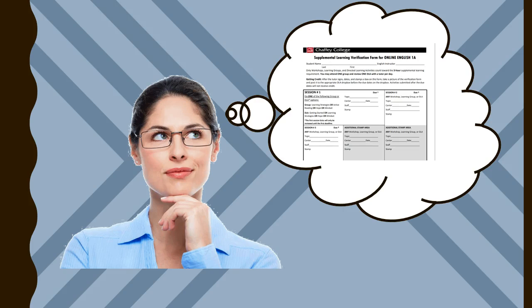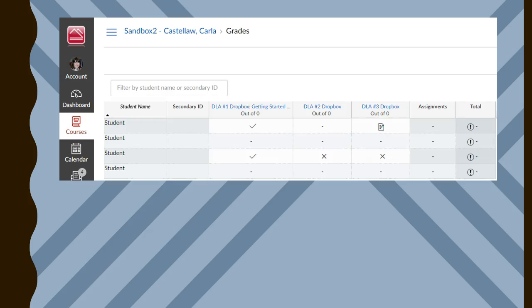To help you determine whether your students have completed their supplemental learning requirement, you've been added to the CAL as a non-editing instructor, which gives you permissions to see the grades section of the CAL. That section allows you to decide whether your students have completed their supplemental learning requirement.